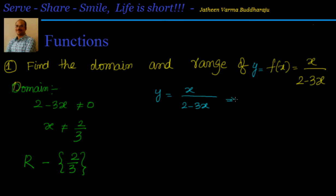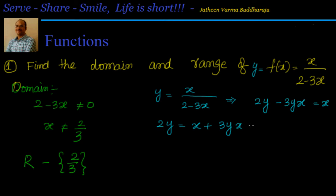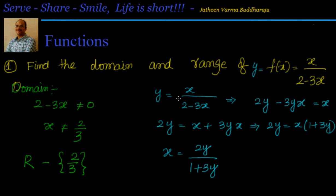Let me simplify this. If I simplify, I will have y(2 - 3x) = x, which gives 2y - 3xy = x. I want to get x out, so: 2y = x + 3yx, which is 2y = x(1 + 3y). Therefore x = 2y / (1 + 3y).